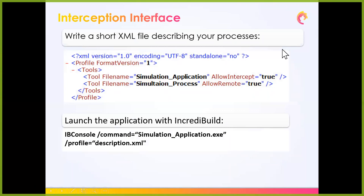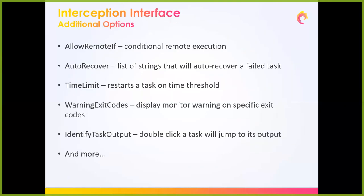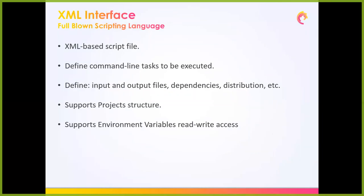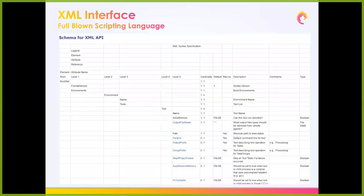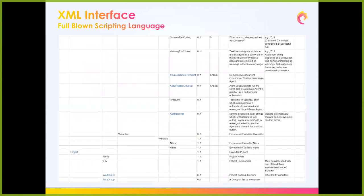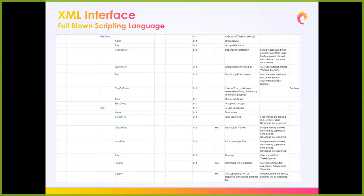The profile interface lets you instruct IncrediBuild which process names in your executions to run remotely, then run your original project with IncrediBuild. You can define groups, use conditionals to specify which tasks to run remotely, and find all additional options in our documentation. There is also a full XML scripting interface — a scripting language that lets you write a full script instructing IncrediBuild how to run tasks, in which context, with what parallelization, and more.